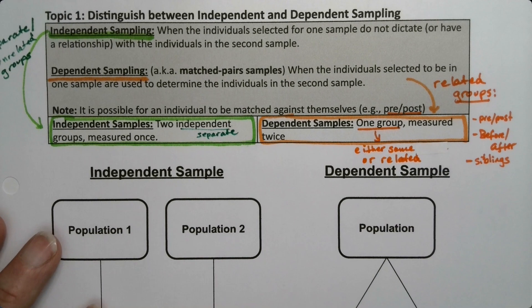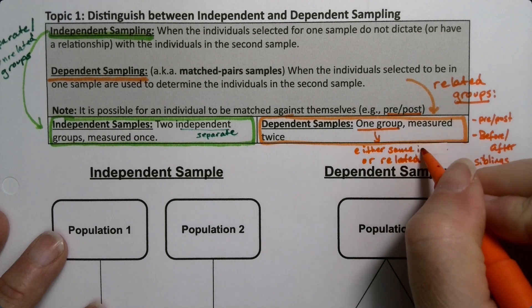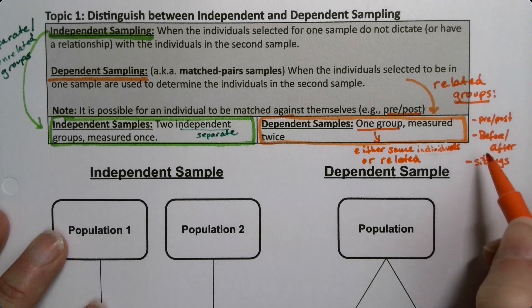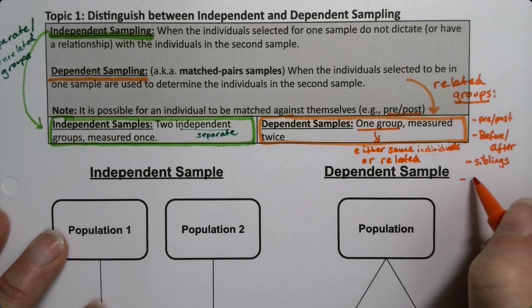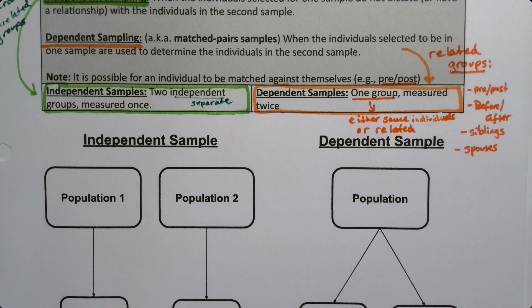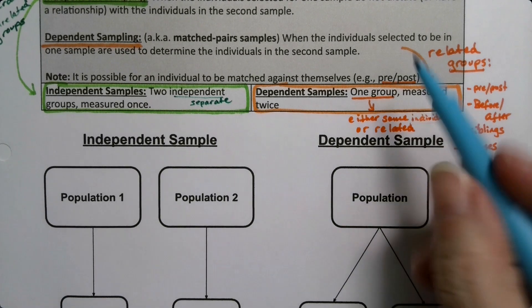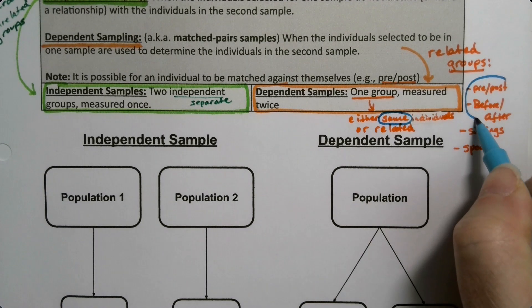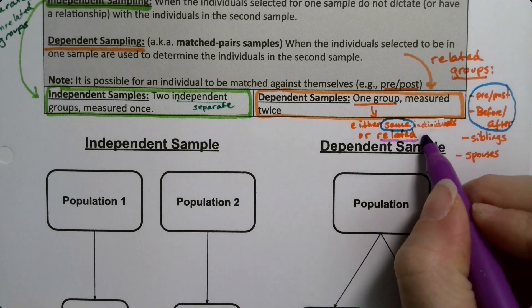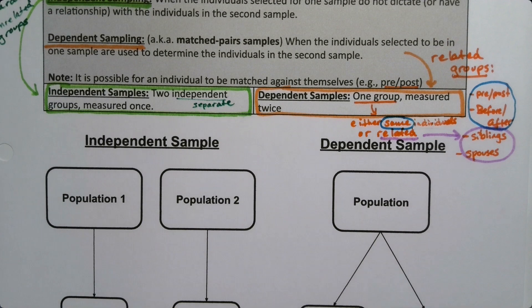So I'm going to say either the same individuals — which would be pre/post or before and after — or they could be related. Spouses count, right? If they're married that would count; they're related, even if it's a relation by choice. Same would be things like literally the same person both before and after, whereas related would be things like siblings and spouses. Either one counts — they both count as one group measured twice.